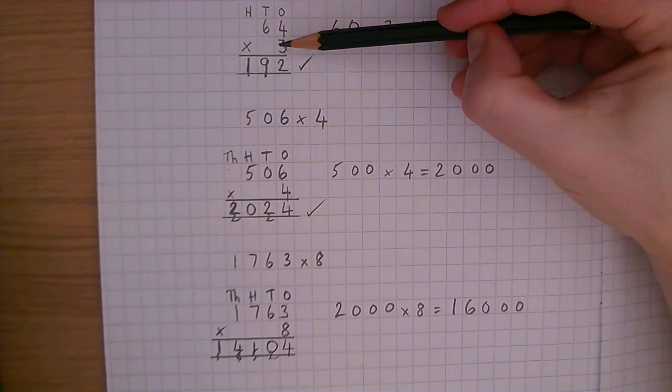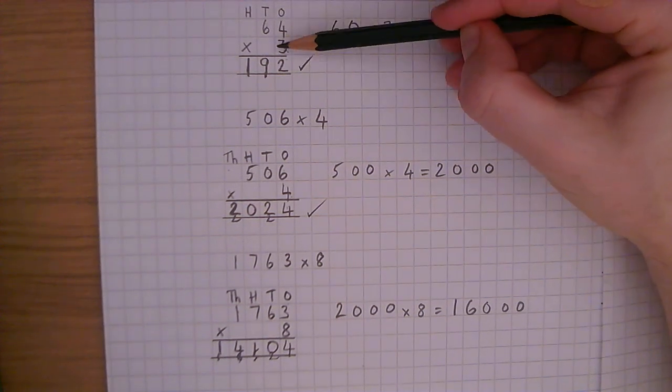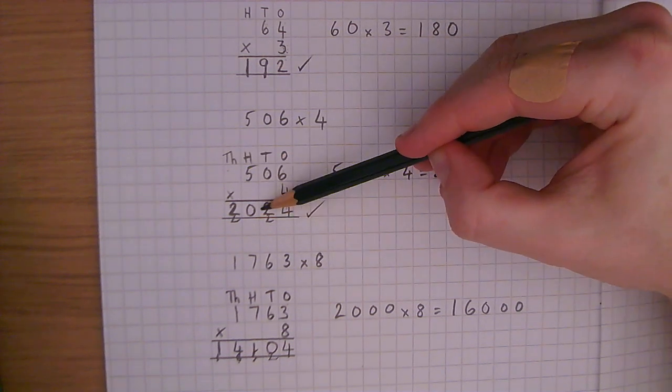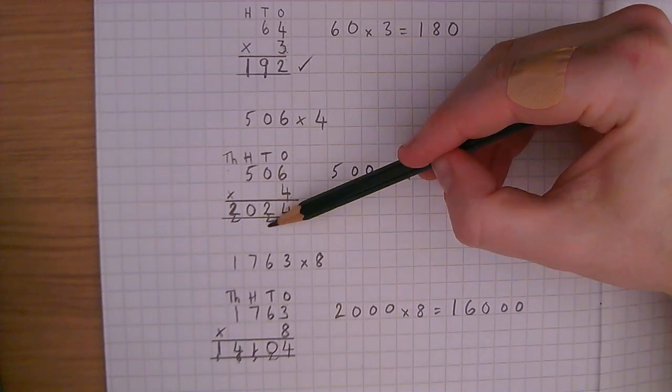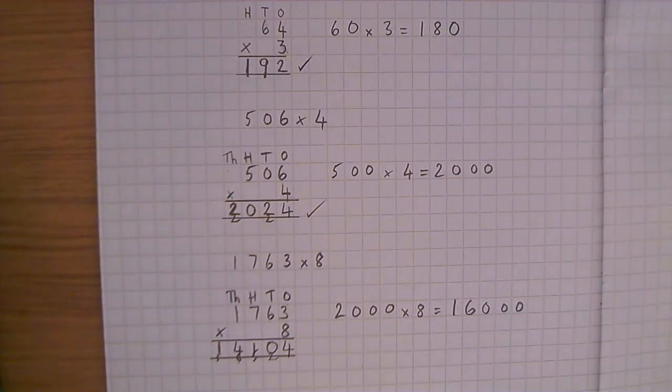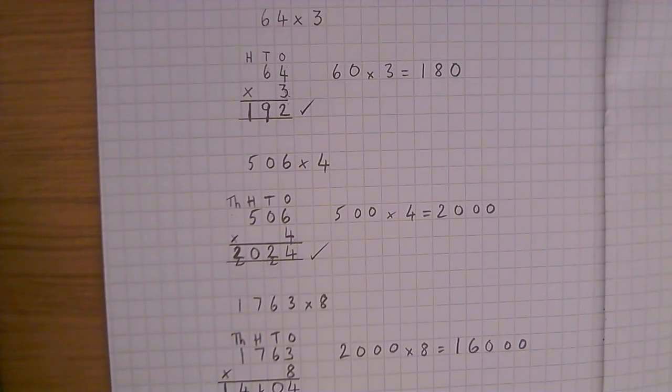Remember ones times ones, ones times tens and so on. That method. Remember to add that digit that's on that line. Don't forget to add that one as well. And remember to check. And that's it. That's how you do short multiplication. Have a go at it. And good luck.